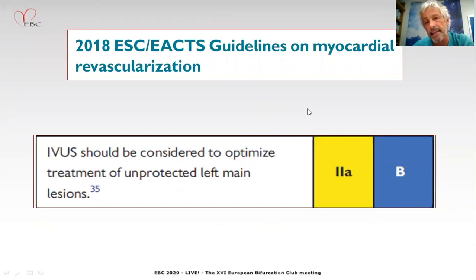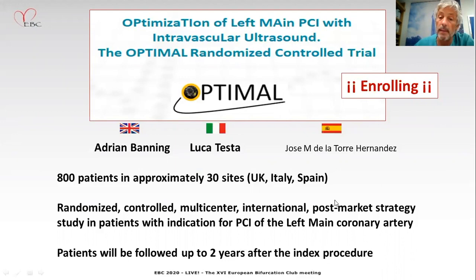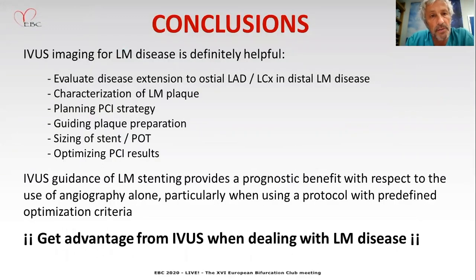We are at a Class IIa recommendation for IVUS in left main stenting. If we want this to be upgraded to Class I, we need a randomized trial. That's why we are now enrolling in the OPTIMAL trial with 800 patients to be randomized in Italy, UK, and Spain — randomized to angiography or IVUS during stenting of the left main. Two years follow-up, and this trial will give definitive answers to this question.